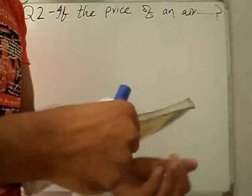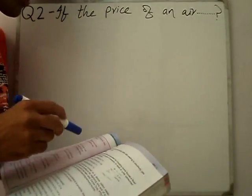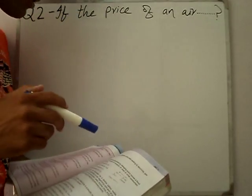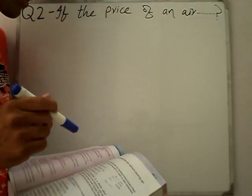Question Number 2: The price of an air conditioner is Rs. 40,000. Then work out the amount of tax on it at the rate of 16%.